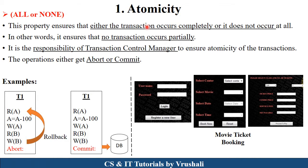Now explaining ACID properties is one of the most important questions in your exam, so you need to explain all these properties with examples. The first property is Atomicity. You must remember this: either all transactions have been performed or none of the transactions have been performed. This is the rule of atomicity.